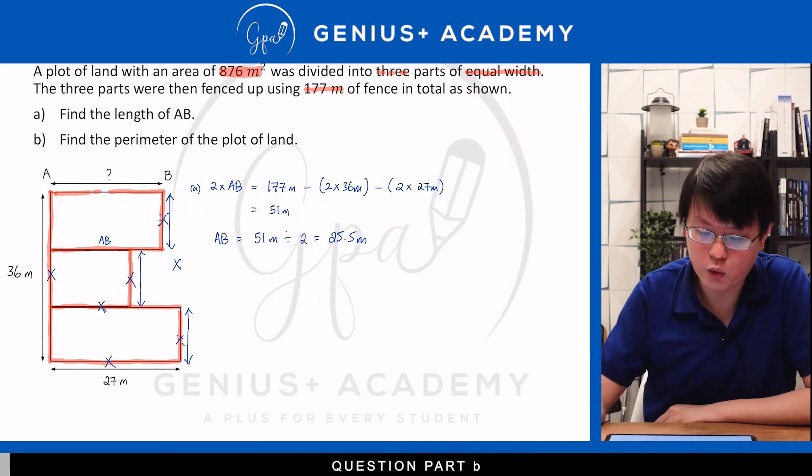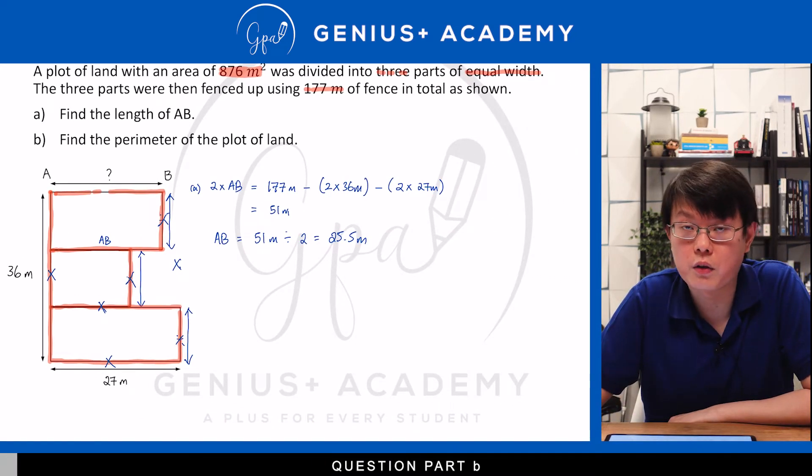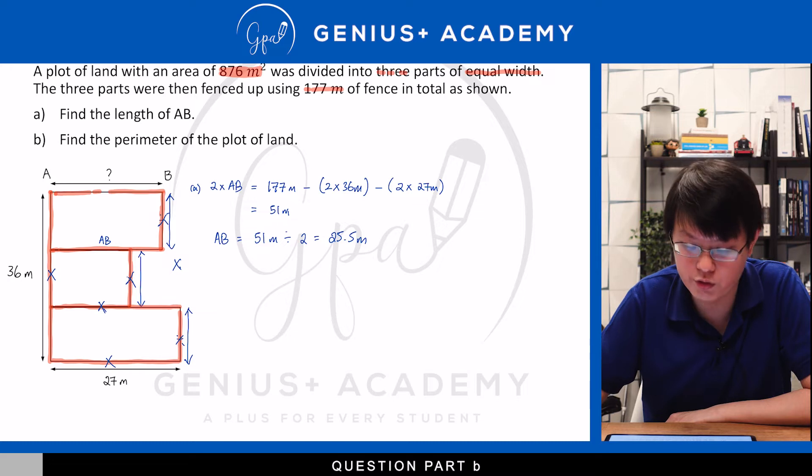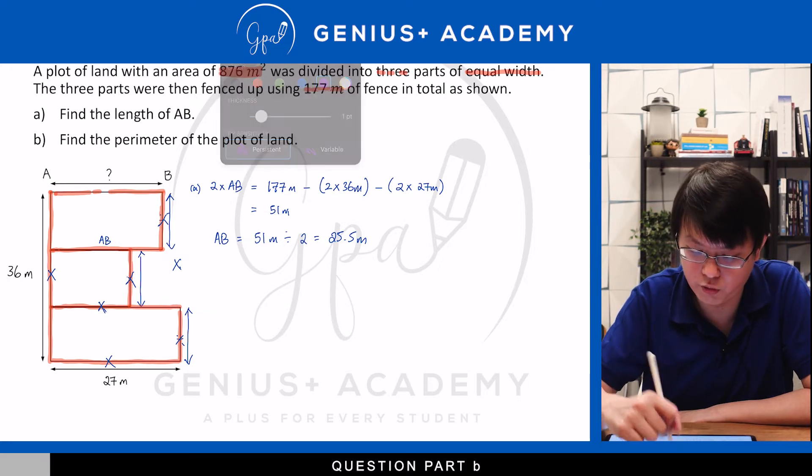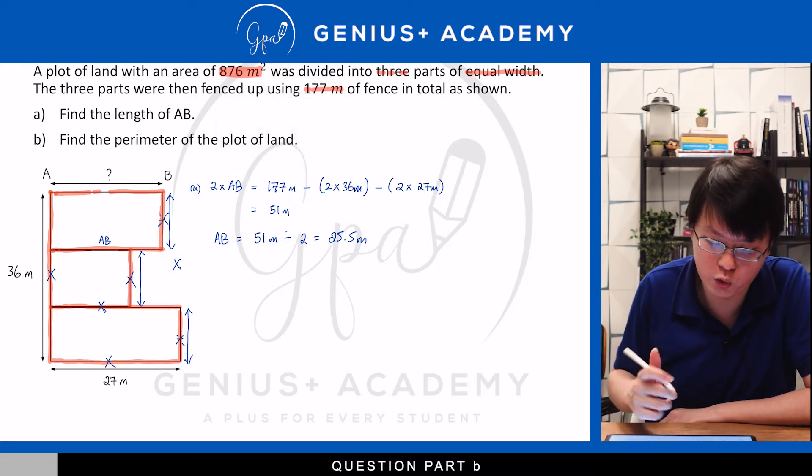Now, you should realise from part A of the question that we didn't actually use the area that was given to us. So, naturally, part B of the question would involve using the area. Always pay attention to information that has been given but has not been used. Because that would likely mean that for subsequent parts, we need to use it.